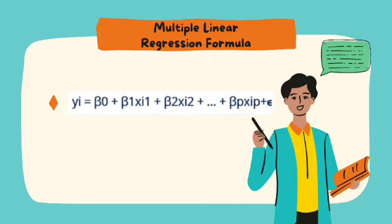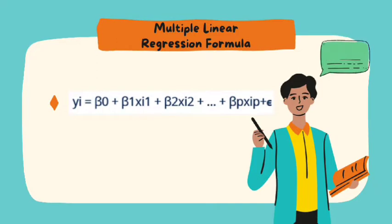And bp is the slope coefficient for each independent variable, and epsilon is the model's random error term.